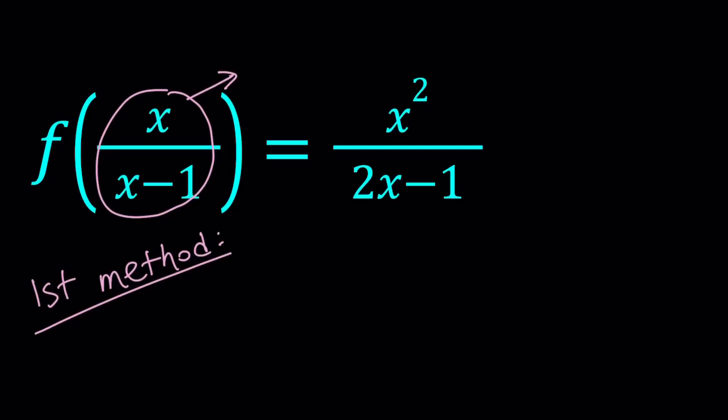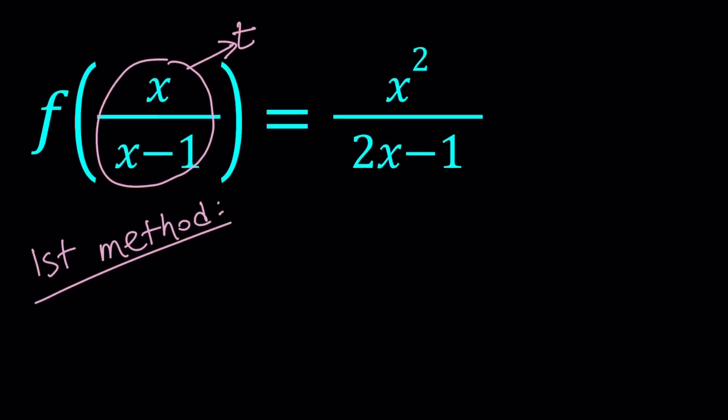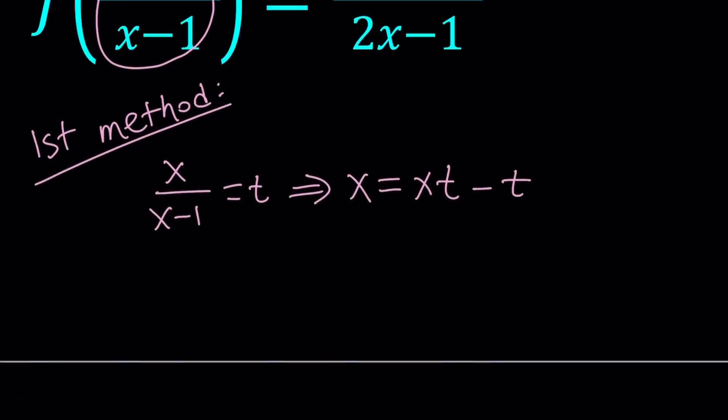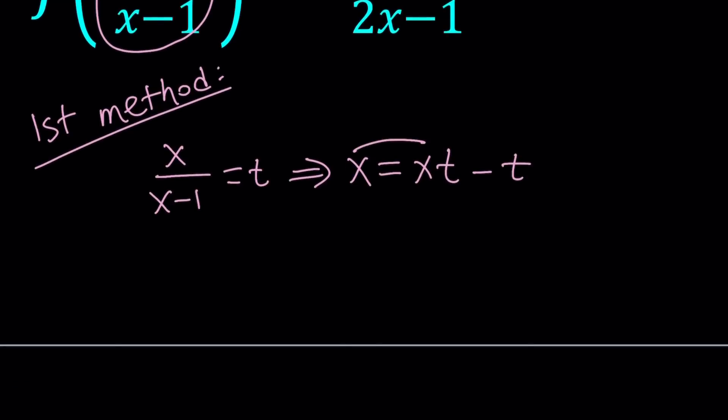So, let's go ahead and set this equal to t. So, now our assumption is x over x minus 1 equals t. Cross multiply, x equals xt minus t. And then, since we're trying to solve for x, let's go ahead and put these two together. xt minus x. And then, bring the t on the left. You could also line this up a little bit. Like this.